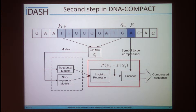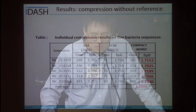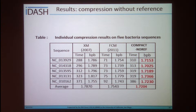We first compare the compression performance and complexity of the proposed Compact No-Reference with two state-of-the-art no-reference algorithms, XM and FCM. The table depicts compression results on 5 bacteria sequences with 10 million or more bases. In DNA sequences there are 4 distinct bases, so it takes 2 bits to represent each base without compression. The DNA Compact No-Reference algorithm achieves the best compression performance at about 1.75 bits per base, though our algorithm has a longer encoding time measured in seconds, because we use a combination of higher-order sequential and non-sequential models.